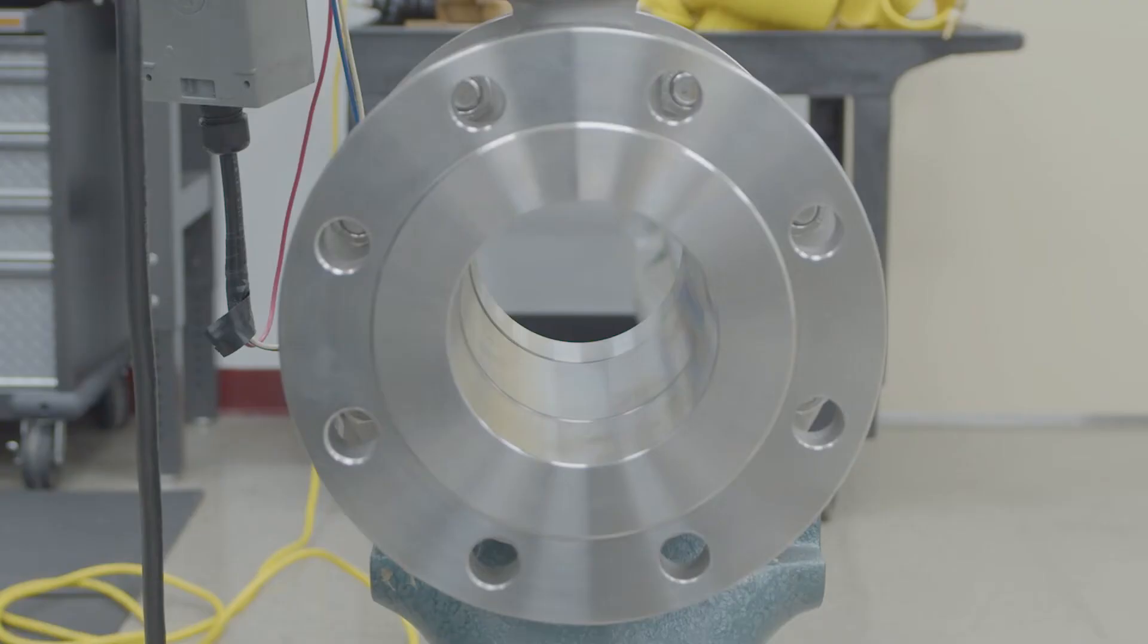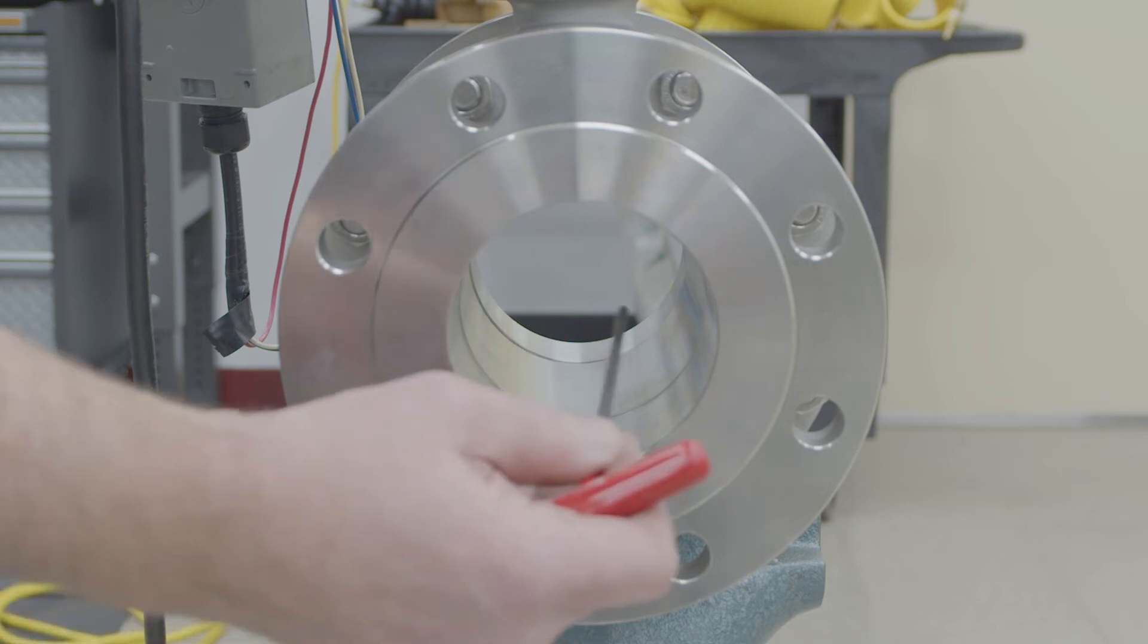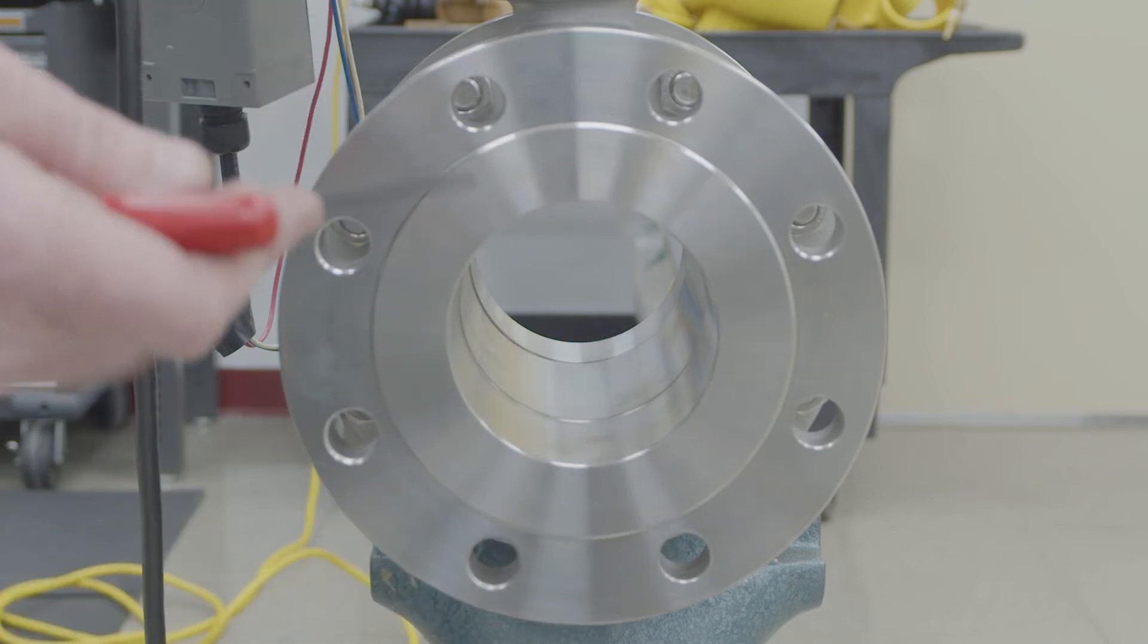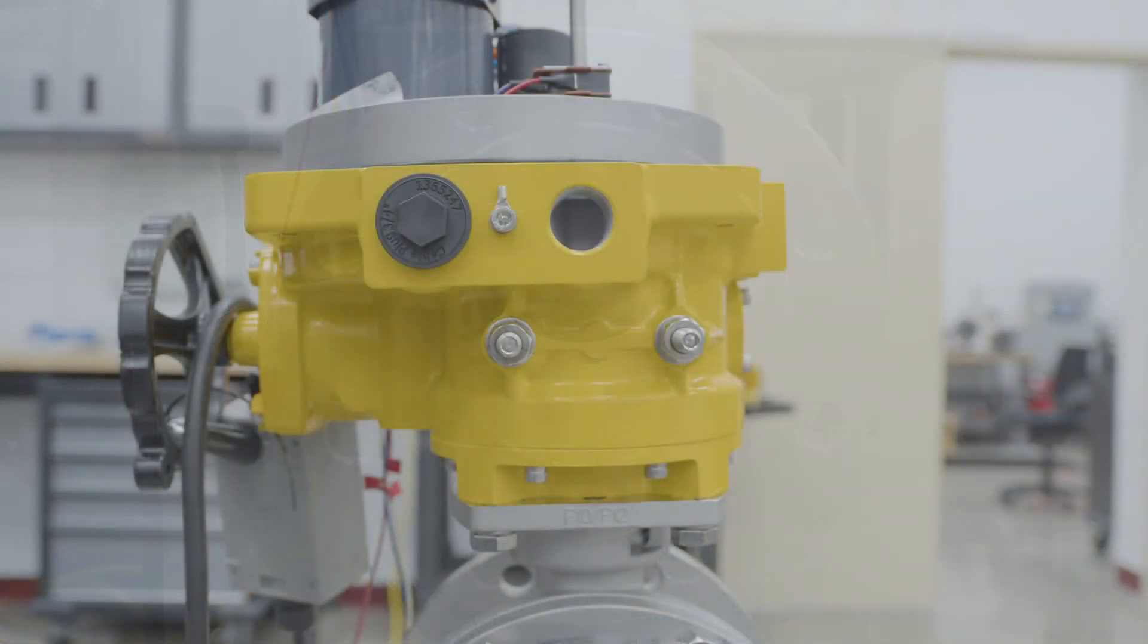So what you're looking for on the open position is the ball being lined up with the body of the valve. So there's no ledge there. So one thing you don't want to do is ever stick your hand inside there, obviously. So that's why I'm pointing using the Allen wrench.